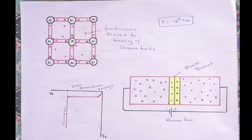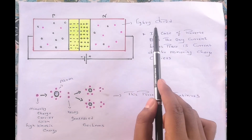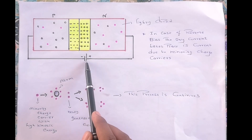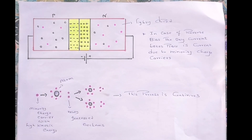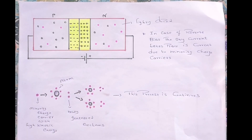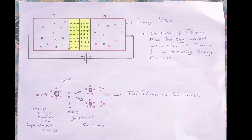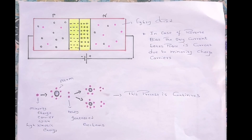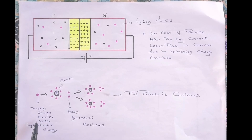Now let us discuss about avalanche breakdown. Avalanche breakdown usually occurs in lightly doped PN junction diodes. Due to the reverse biasing voltage, the width of the depletion region increases, and because of this increased width, majority charge carriers — electrons in N-type and holes in P-type — cannot flow through the depletion region. The only current that flows is due to minority charge carriers. As we gradually increase the reverse biasing voltage, the depletion region widens further and the electric field across it also increases, causing minority charge carriers crossing the junction to acquire maximum kinetic energy.